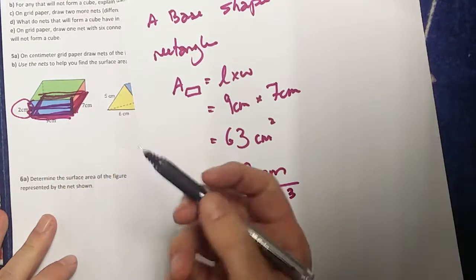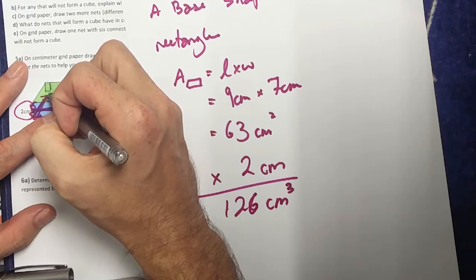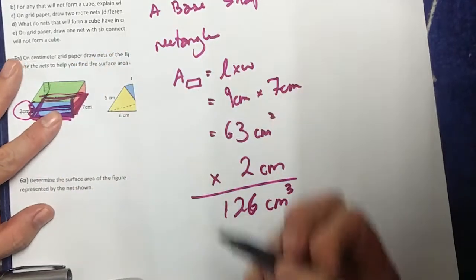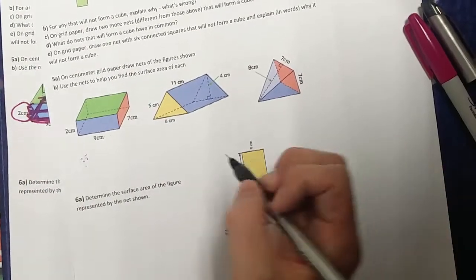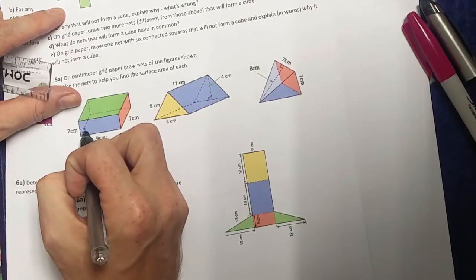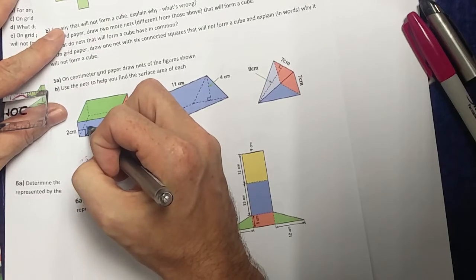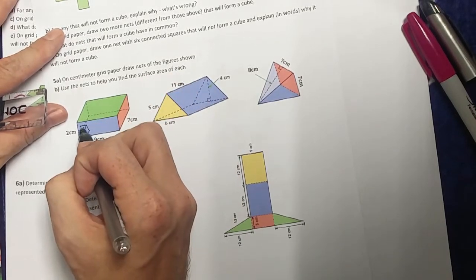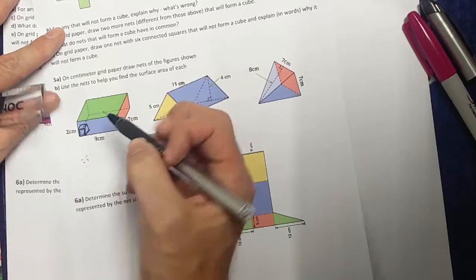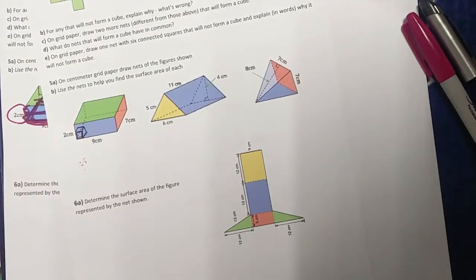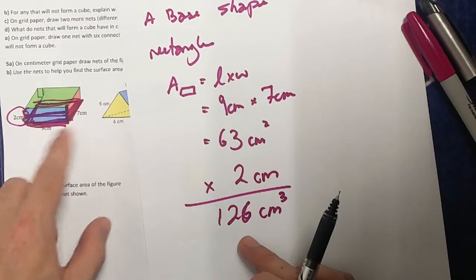Or we can think about it: inside this shape here, before I was just counting the bottom squares, but now I'm counting cubes inside my prism. So how many of those cubes inside this prism? It is 126 cubes.